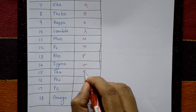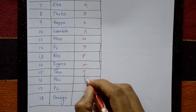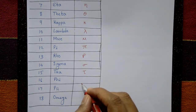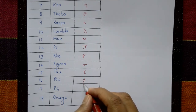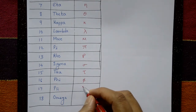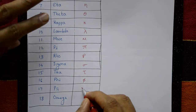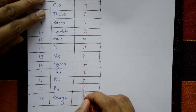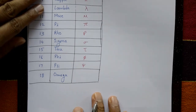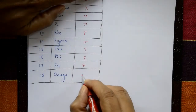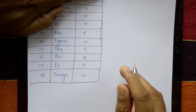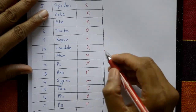Sigma — this is sigma. And tau — this is tau. And psi — this is psi. And the last one is omega — this is omega. So these are the Greek alphabet.